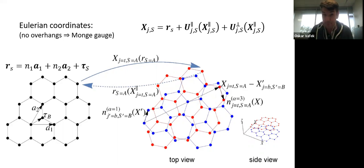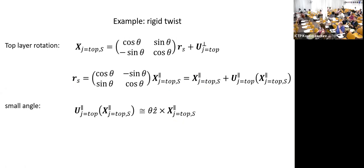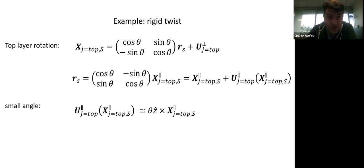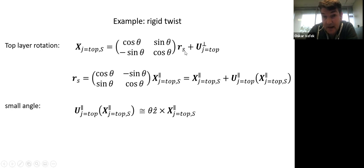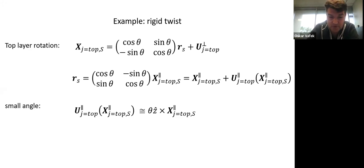As a quick example, consider a rigid twist where the top layer is rotated. The true position of atoms in the top layer is given by a rigid rotation of the reference positions plus an out-of-plane shift so they're not sitting on the bottom layer — so u_perp would be constant, with no corrugation. Inverting this rotation matrix gives us the in-plane reference positions in terms of true positions x_parallel. Then in a small angle approximation, the displacement field u(x) is simply set by the angle crossed with the true positions x — giving u of x linear in position.